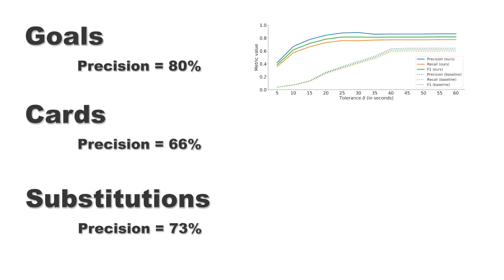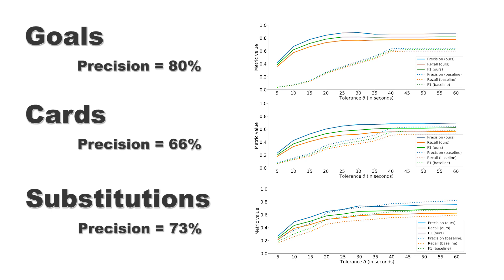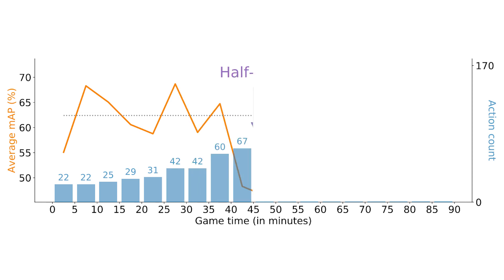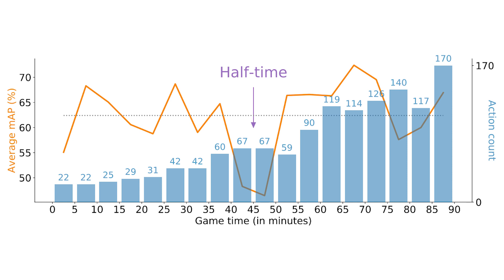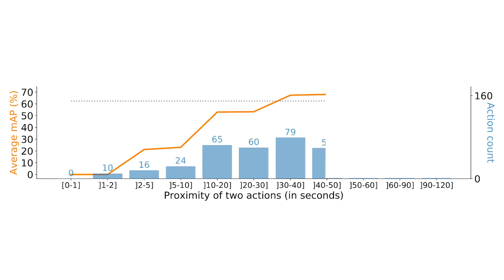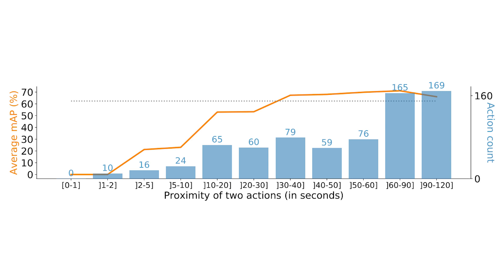First, we can take a look at the same metric for each class. The goal class is the easiest to retrieve, followed by cards and substitutions, which have similar lower performances. Cards and substitutions are more difficult to spot because these actions are much shorter and are not often clearly shown on TV. We can also look at the evolution of performance throughout a regular 90-minute game. The number of events shown by the blue bars increases through time. The performance, shown in orange, decreases around halftime — usually because some substitutions take place during halftime and are not shown on TV but are annotated in the dataset. Finally, the performance drops as the proximity of events increases, for example if you get two cards in a row. This indicates that improvements are needed to better detect very close events.